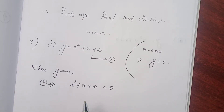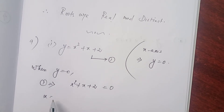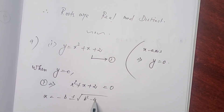In that case, you can use the quadratic formula: x = (−b ± √(b² − 4ac)) / 2a. That is the formula.